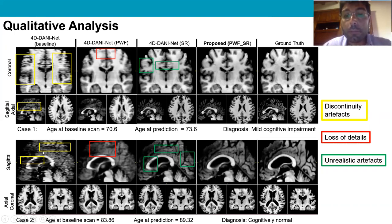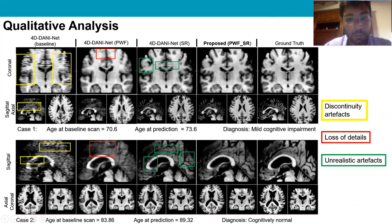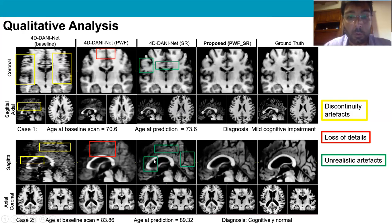The use of PWVF reduces this issue. When PWVF is used without the super-resolution block, anatomical details are often not visible, highlighted with red boxes in the figure. Conversely, when the super-resolution block is used without PWVF, images can show anatomical details but may contain unrealistic artifacts, highlighted with the green box in the figures.